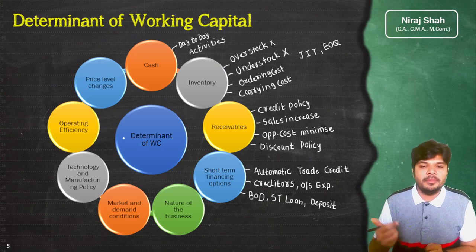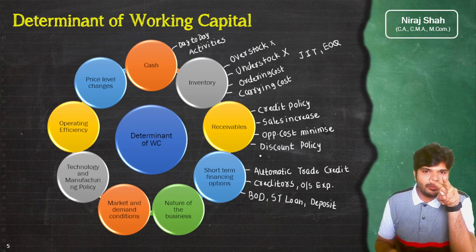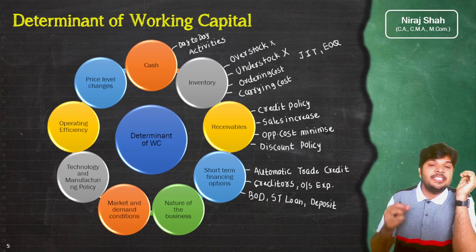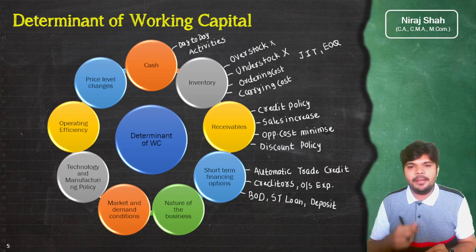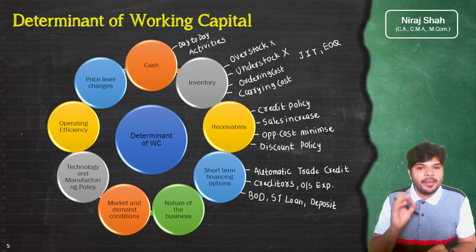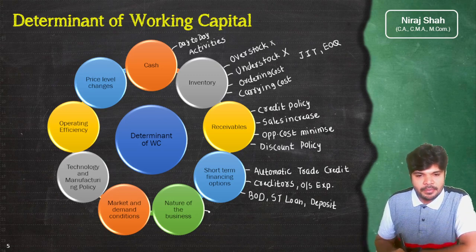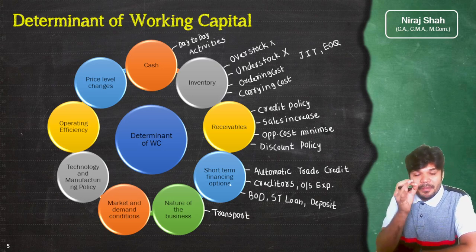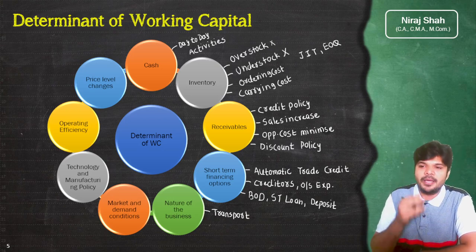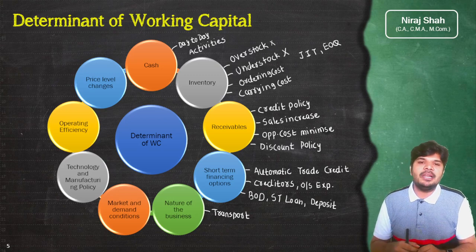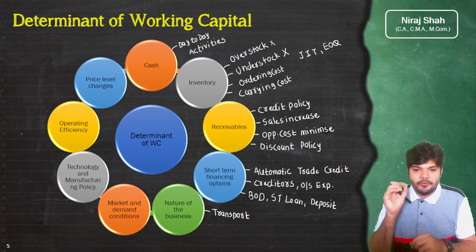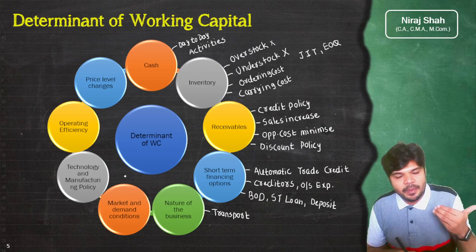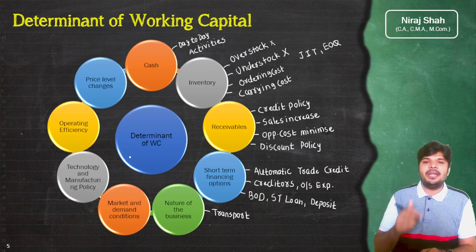Nature of business भी एक determinant है — दो तरह के business होते हैं, एक जिसमें working capital requirement काफी high रहती है, और दूसरे जिसमें low होती है। जैसे transportation business में working capital requirement low रहती है क्योंकि payment generally advance में करना पड़ता है। Railway में fixed capital बहुत ज्यादा चाहिए लेकिन working capital कम चाहिए क्योंकि पहले ticket के पैसे देने पड़ते हैं।